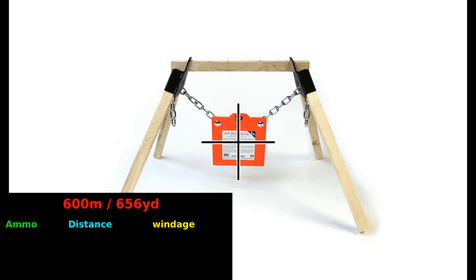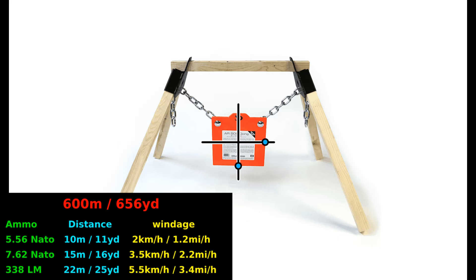At 600 meters we can allow ourselves to make smaller mistakes. So in 5.56 it's 10 meter mistake in the distance and only 2 kilometers per hour in the wind. In 7.62, 15 meters in the distance and 3.5 kilometers per hour wind. And 338 will allow 22 meters mistake in the distance and 5.5 kilometers per hour with wind.